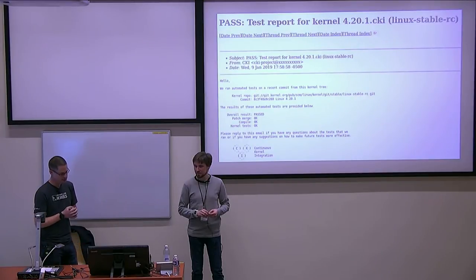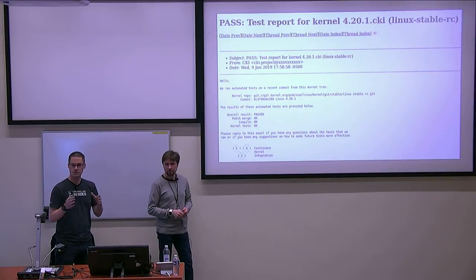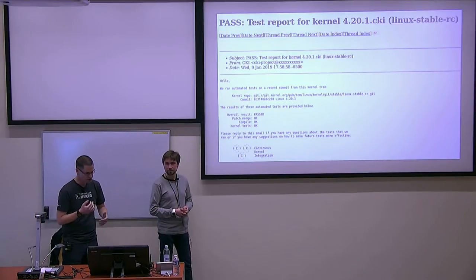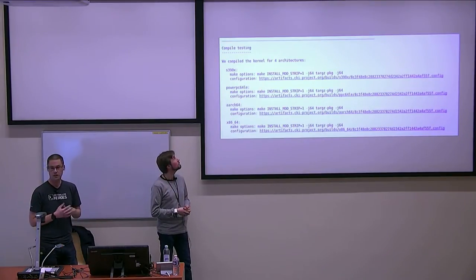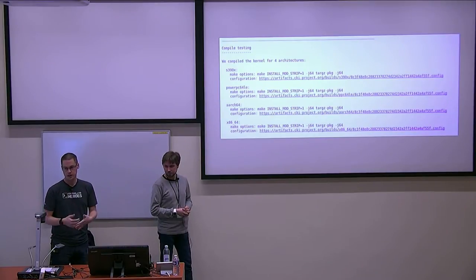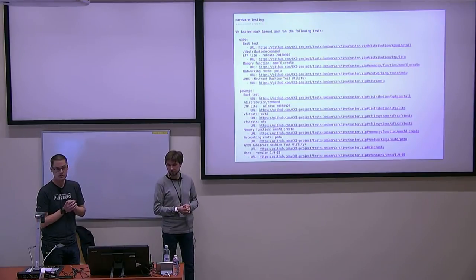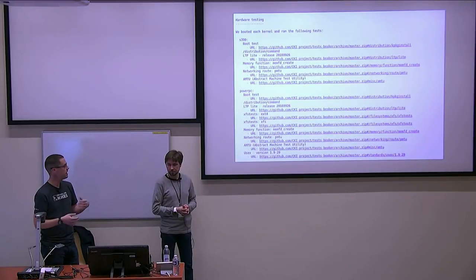We started sending emails and testing his RC releases. He has a workflow where he'll prep an RC — say 4.20.1 — make a tag, get everything ready but not release it yet, and ask people to test. We send a result saying: what is the overall result, did it compile okay, did all the kernel tests run? Really basic. We also provide ways to reproduce the same compile — here's the exact config, here are the make options, you can go run this on your own. All the tests are open source, so anyone can run them. We even offer up the kernel we built as a tarball if you don't want to compile it yourself.